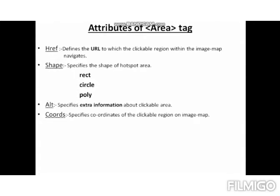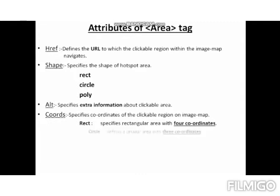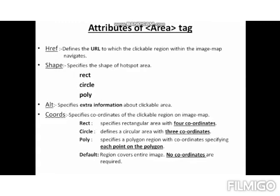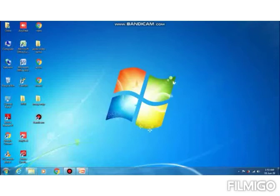Next is coords, which specifies coordinates of the clickable regions on the image map. For rect, it requires four coordinates — the top-left and bottom-right XY coordinates. For circle, it defines a circular area with three coordinates. For poly, it specifies a polygon with coordinate pairs for each point on the polygon. Next is default, which covers the entire image and requires no coordinates.